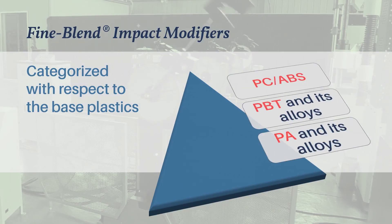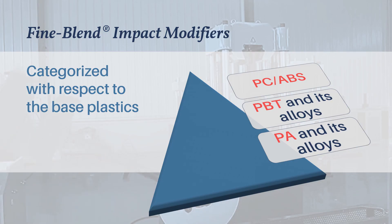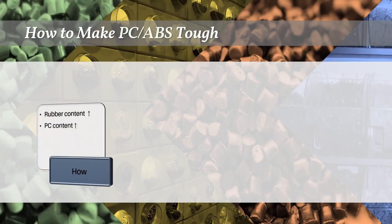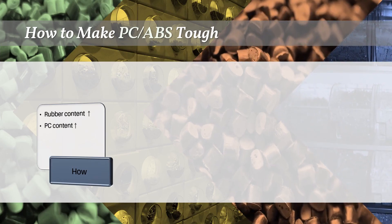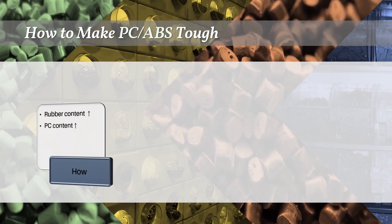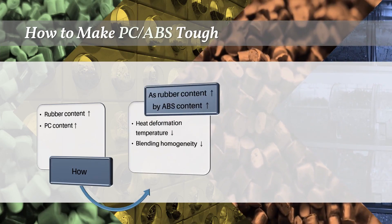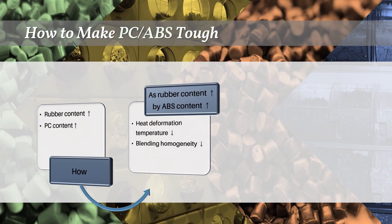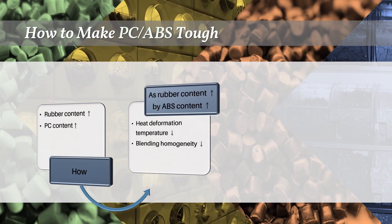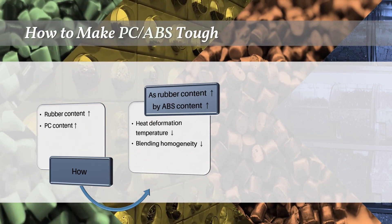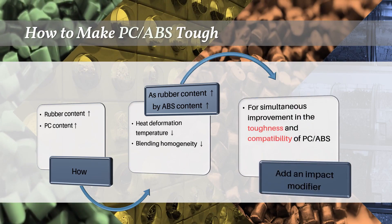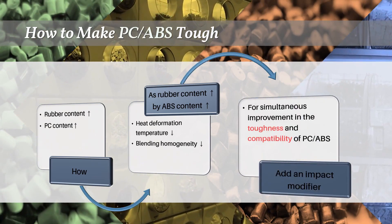These base compounds are PC/ABS, PBT, and polyamide. To make PC/ABS alloy tougher, it is necessary to increase rubber content and to balance PC content. However, a larger rubber amount results in a lower heat distortion temperature and less compounding homogeneity. One of the best solutions to this problem is to apply a proper impact modifier.